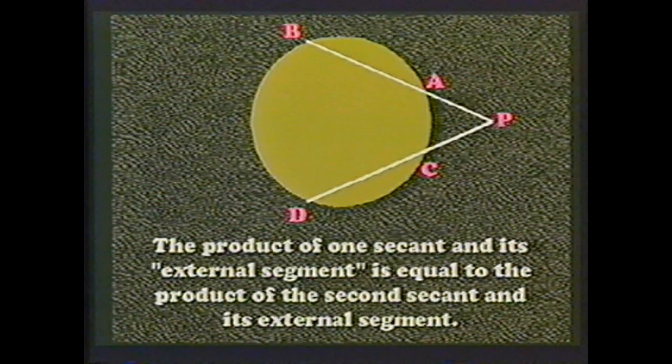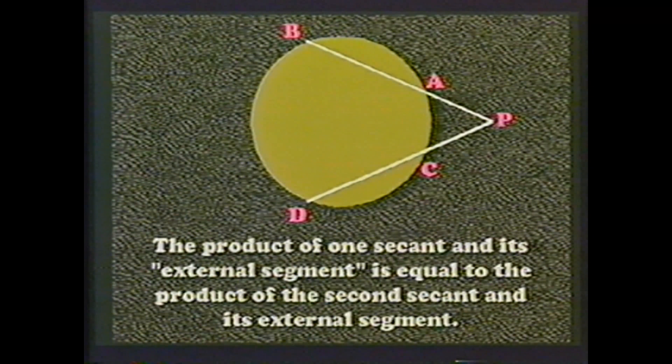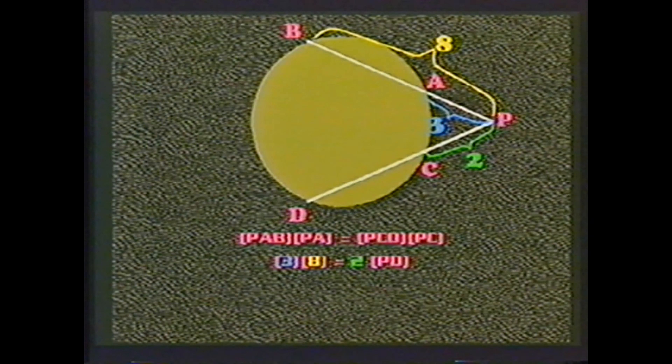The two chords can be at any angle to each other. Another theorem about chords is that if a diameter is drawn perpendicular to a chord, then that diameter bisects the other chord. In this figure, AB is a diameter passing through center O, perpendicular to chord CD at point P. Our theorem states that CP must equal PD.